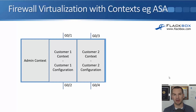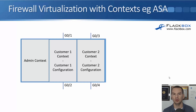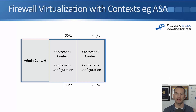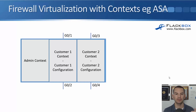Each context acts and behaves as if it's a completely separate physical firewall. You can give each customer's administrators access to manage only their own context — they can SSH in and configure it without even knowing another context exists on the same physical box. The key benefit is cost savings: one physical firewall serves multiple customers, and two physical firewalls can provide redundancy for both customers.